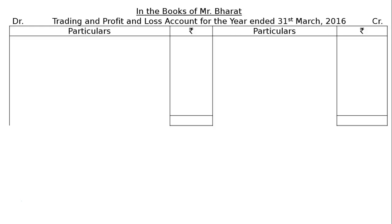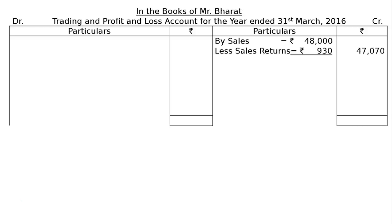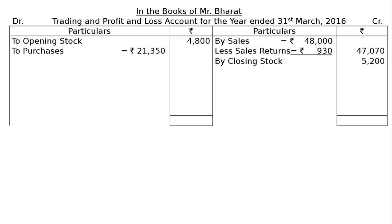We have to draw the format with particular Rs. symbol on both sides. We start from the credit side: by sales Rs. 48,000 less sales return Rs. 930, giving a final column figure of Rs. 47,070. Next is by closing stock Rs. 5,200. On the debit side, we have opening stock Rs. 4,800, and purchases Rs. 21,350 less machinery.